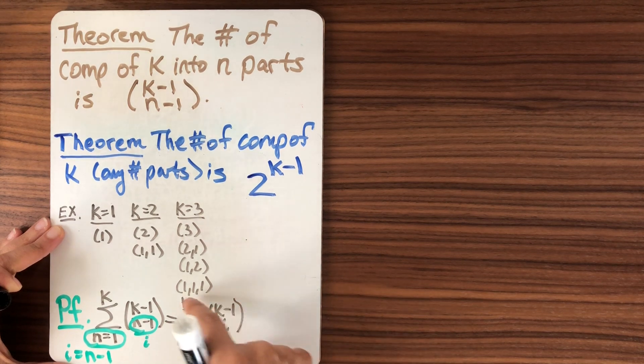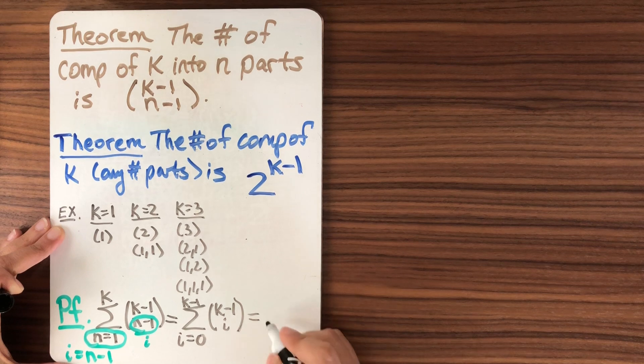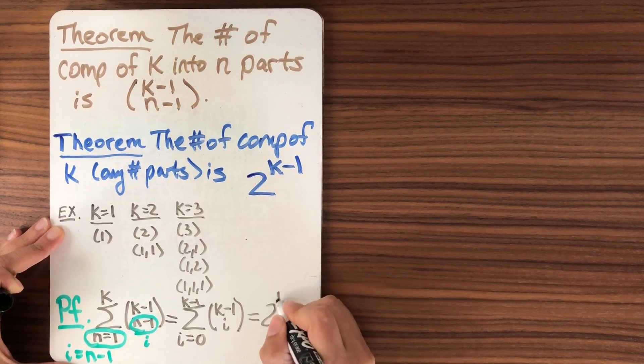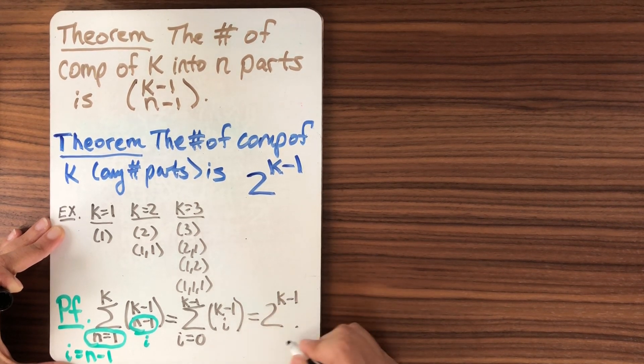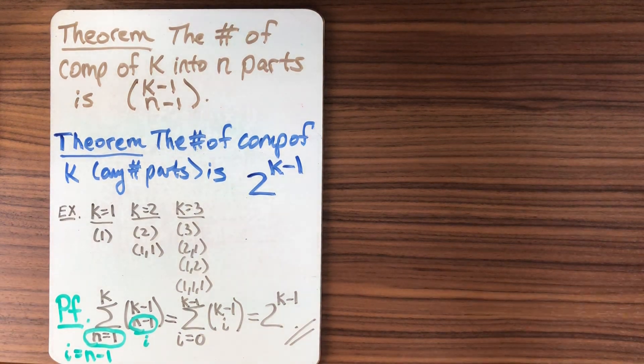And now I have the binomial coefficient k minus one choose i. And now this, it doesn't matter that it's k minus one. You can think of that as m if you like. This, by the binomial theorem and lots of other ways, is just two to the k minus one. And that's our proof. So it's pretty straightforward. It's pretty easy.